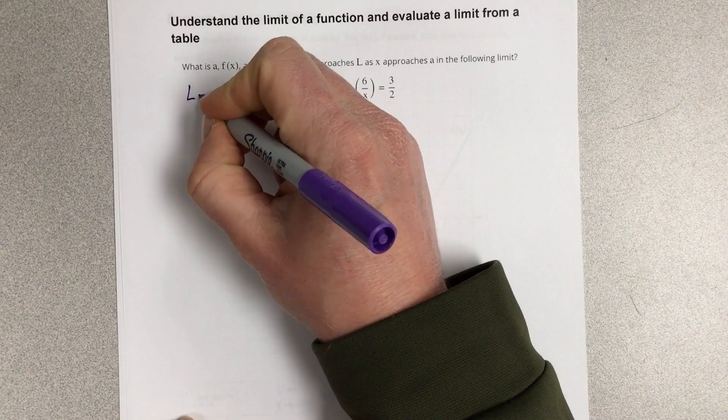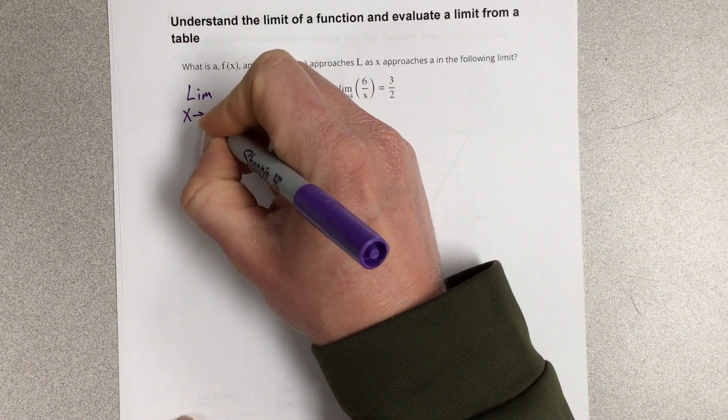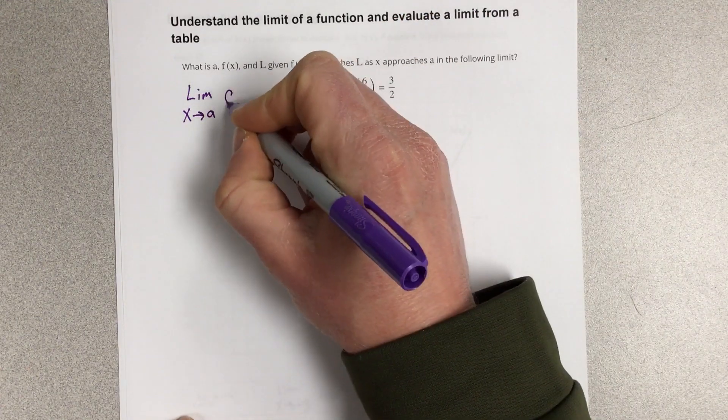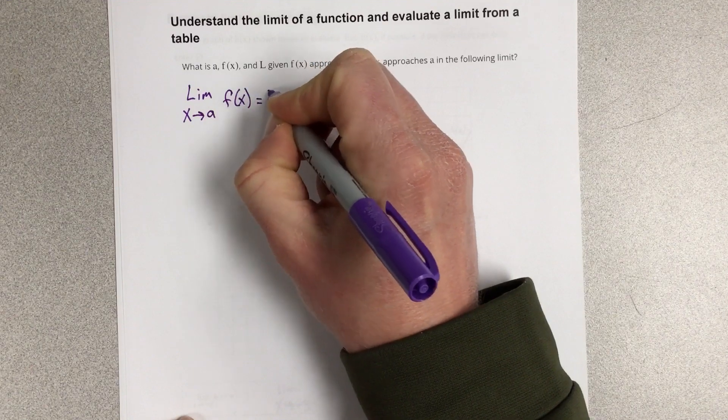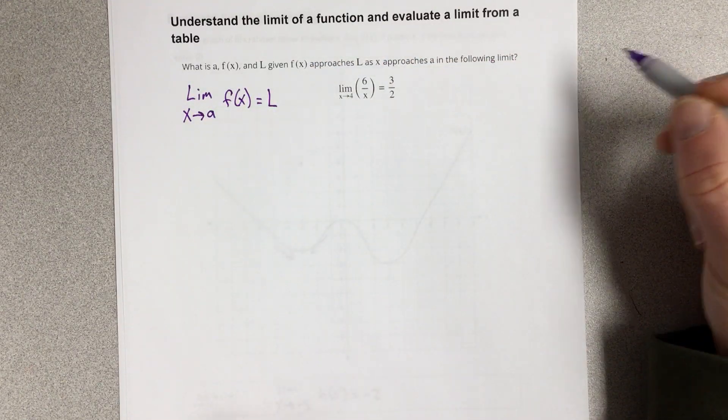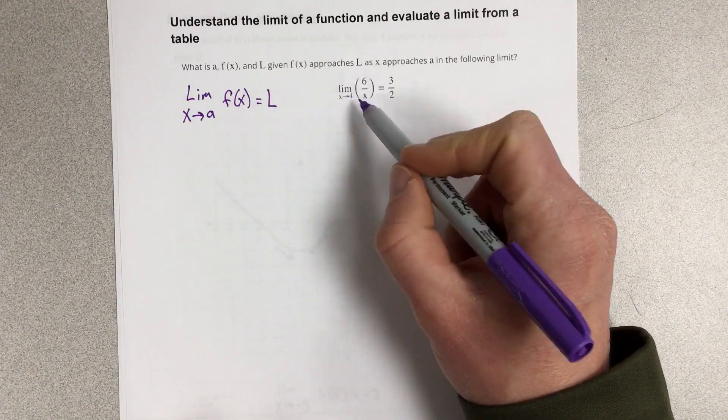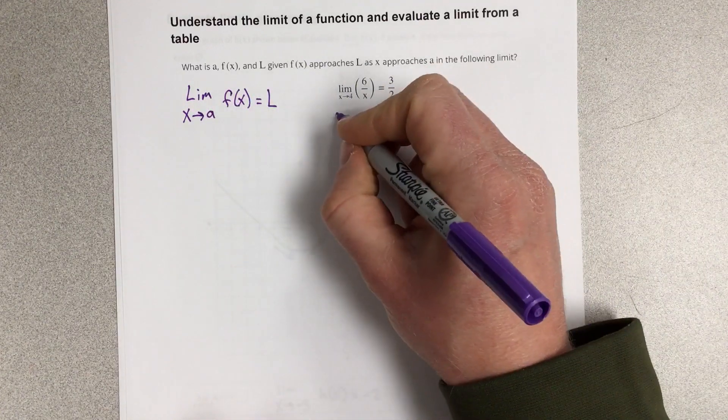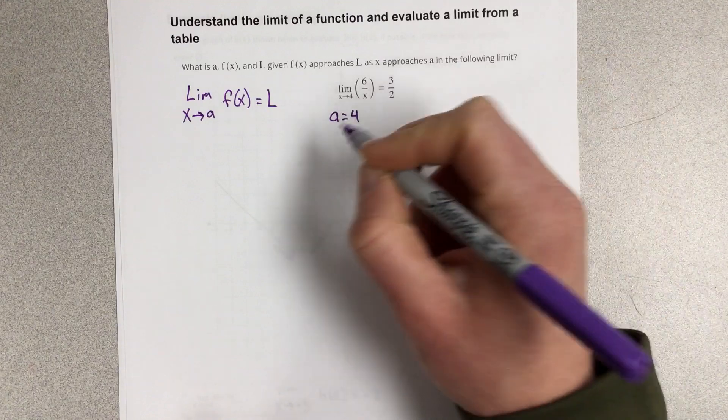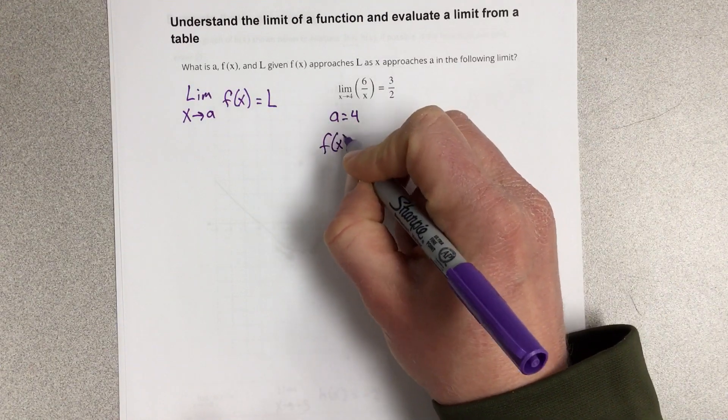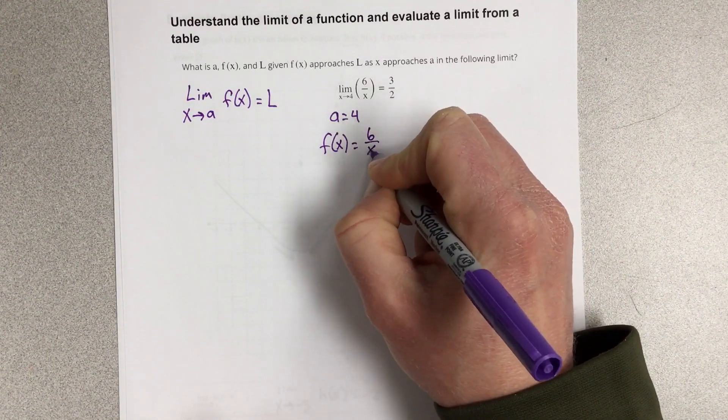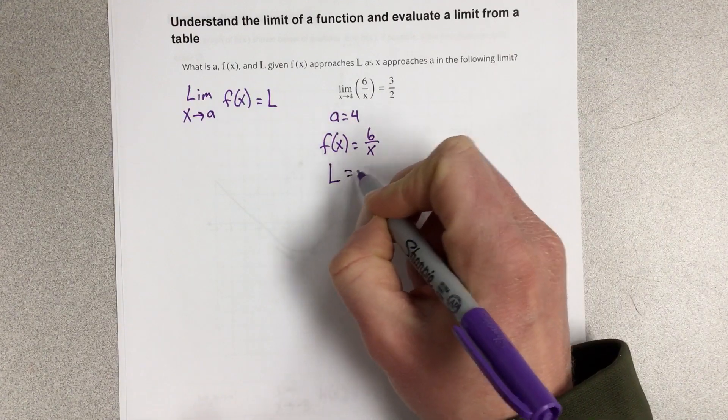So we write limits typically this way: limit as x approaches a of some function and it equals the limit. So if we look at this and we compare what we have in this limit to the general form for the limit, we can say that a is 4, f of x is 6 over x, and our limit is 3 halves.